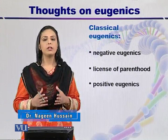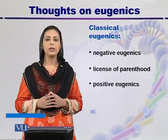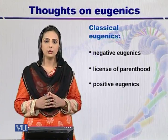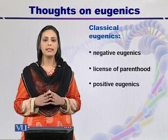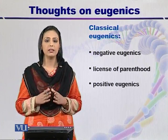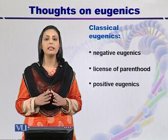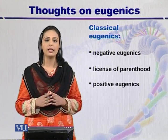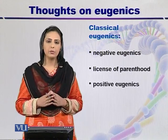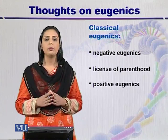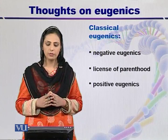There are different types of eugenics: classical eugenics and new eugenics. Classical eugenics is subdivided into negative eugenics, which is the reduction of population; positive eugenics, which is the increase in the reproductive rate; and the license for parenthood. We will mainly focus on negative eugenics and on positive eugenics.